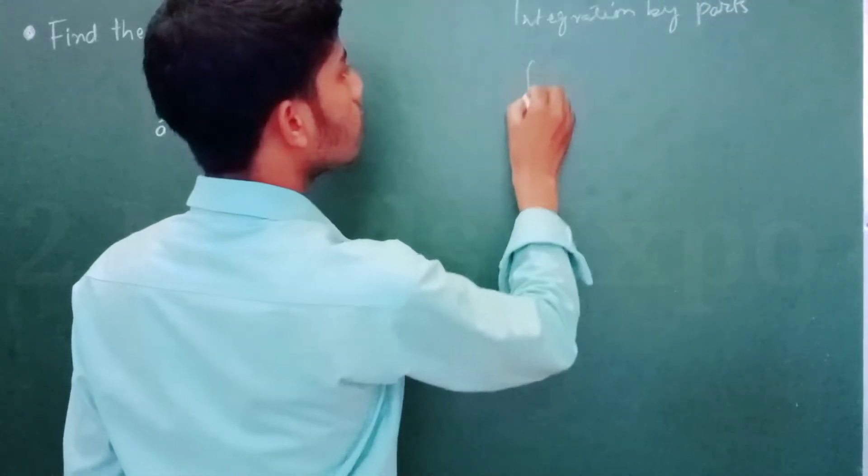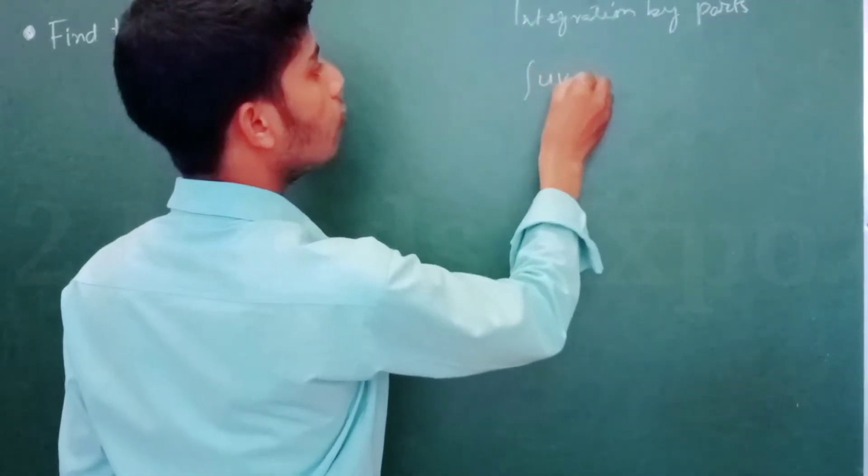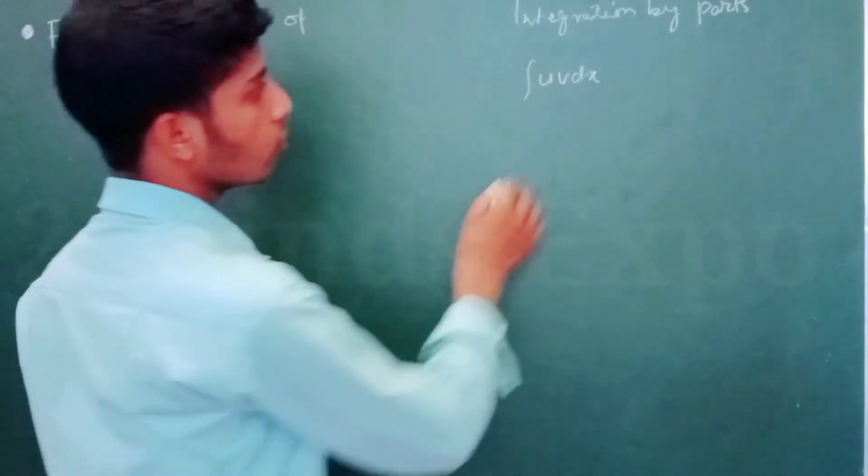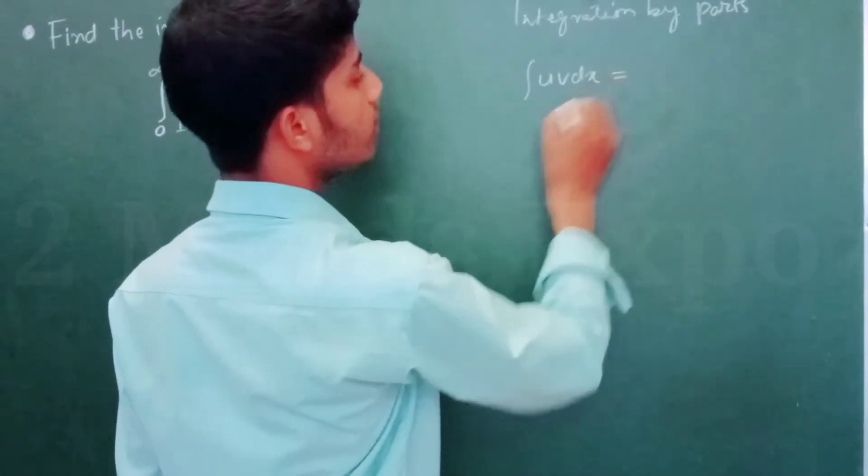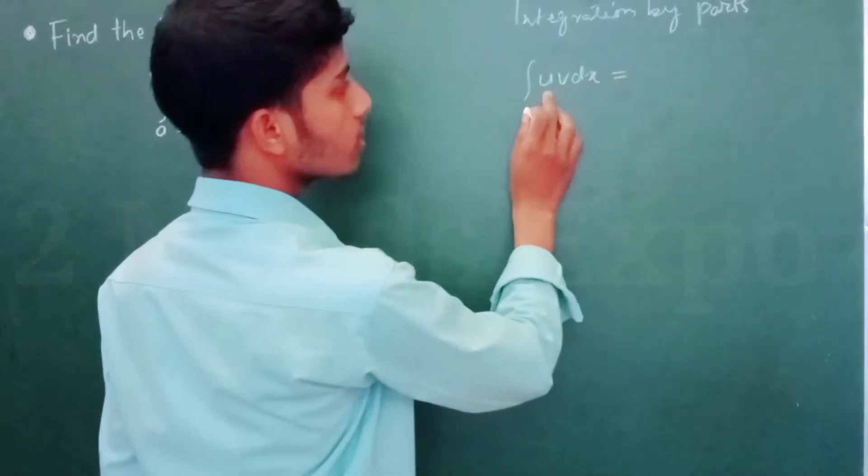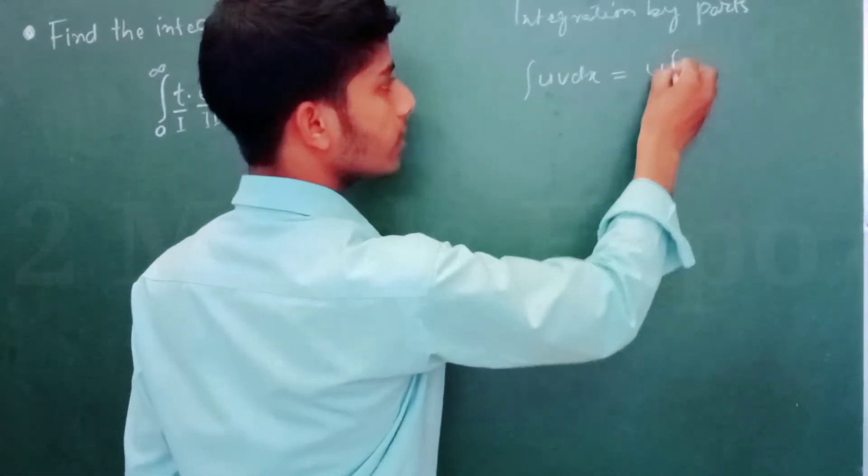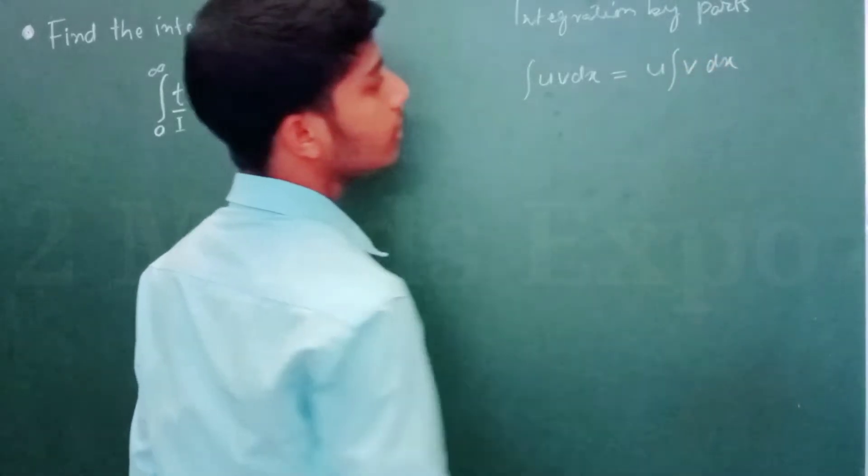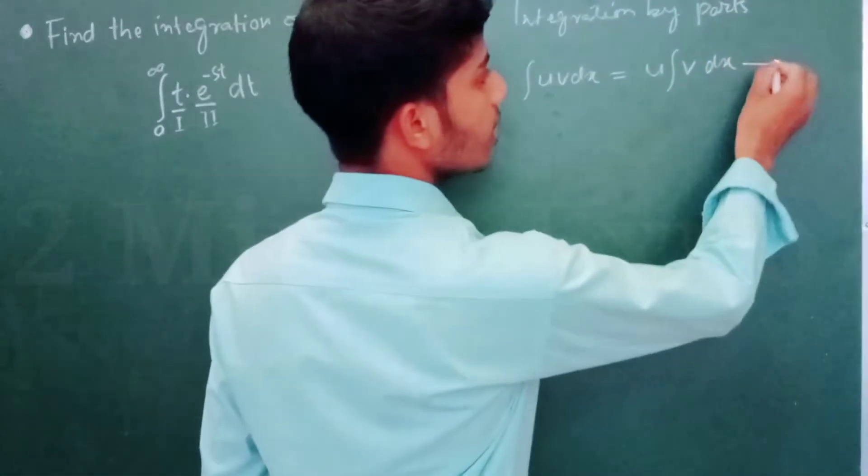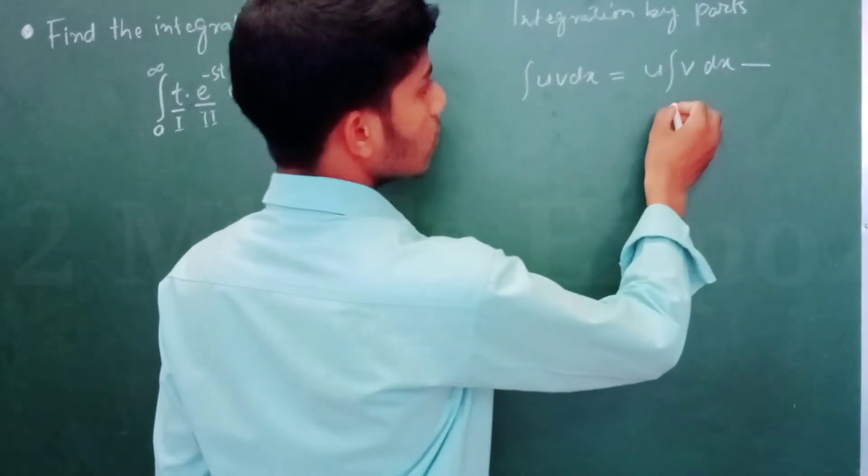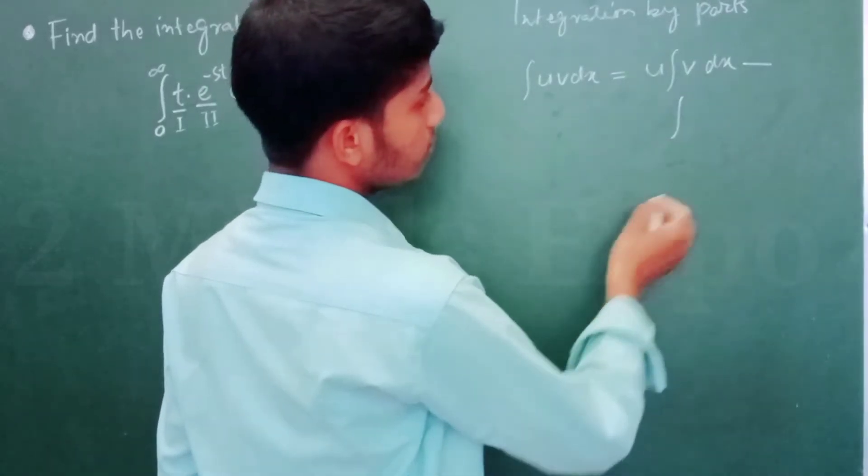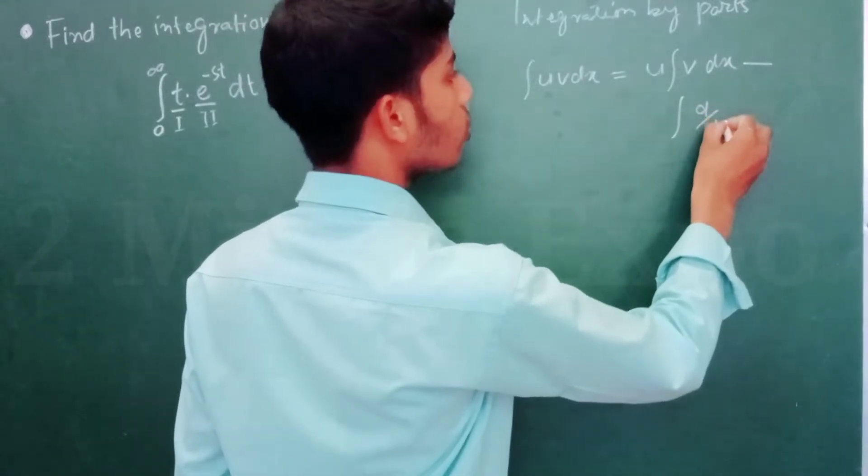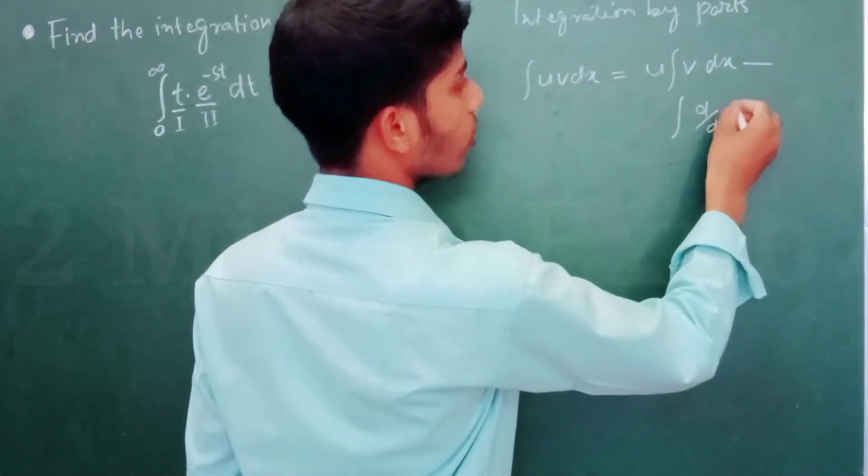First, so u v dx. We all know the formula: integration u v dx equals the first term will come out u and the second part in integration v dx, then minus integration differentiation of first part times integration of second part under bracket dx.